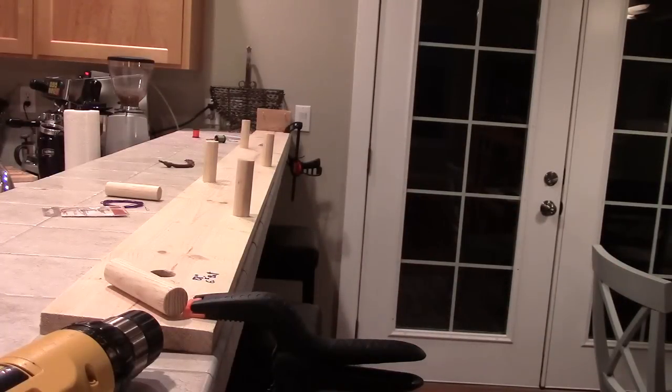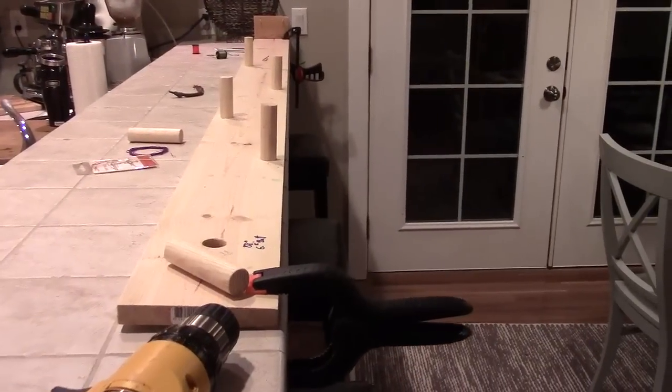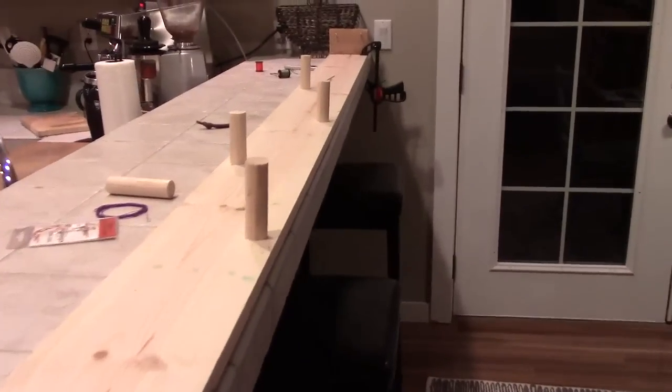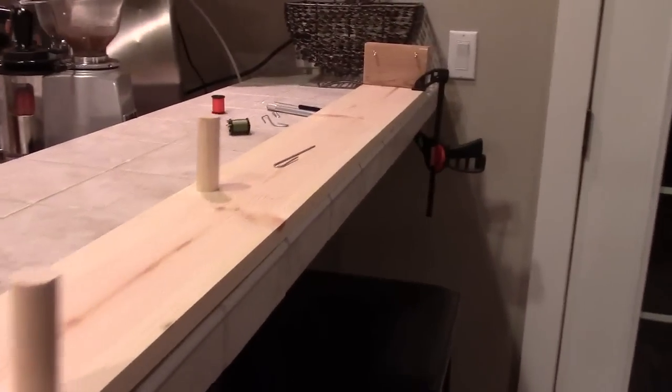A few weeks ago, after following the plans that are posted on the internet for a furled leader jig, I built a basic jig for making a seven and a half foot which results in a nine foot tapered leader. It's really just a long board with a series of wooden pegs inserted into it.